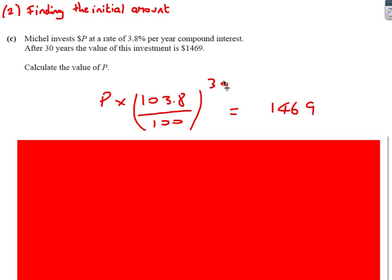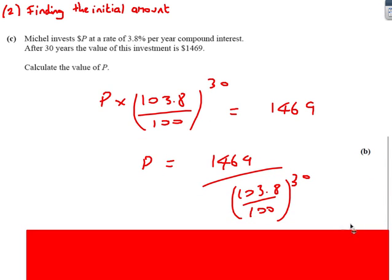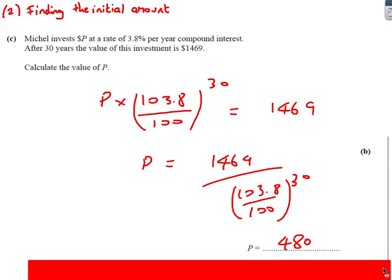Okay, so this time, it's actually a bit easier. We just basically, this is all some number. So stick all this in your calculator. And then you're just going to do that. So 1469 divided by whatever this is. I said just to get it right on your calculator. And we get the answer of 480.